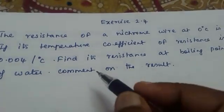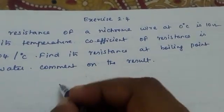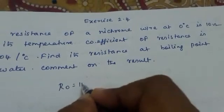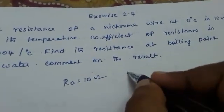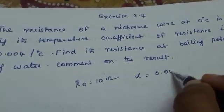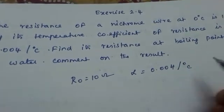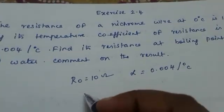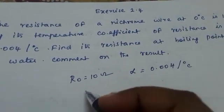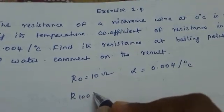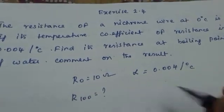The resistance of nichrome wire at 0 degrees is given, so R0 is equal to 10 ohms. And the temperature coefficient is 0.004 per degree centigrade. What is asked is the resistance at 100 degrees. That is the boiling point of water means 100 degrees.